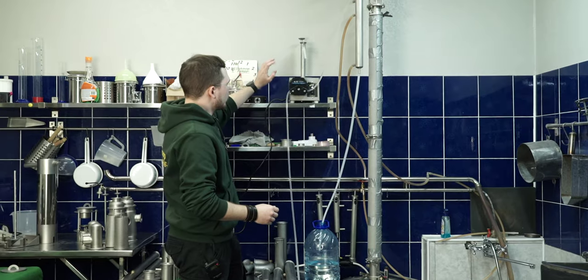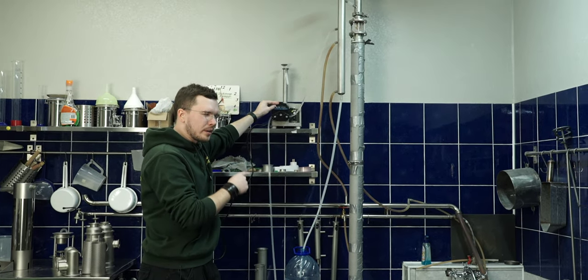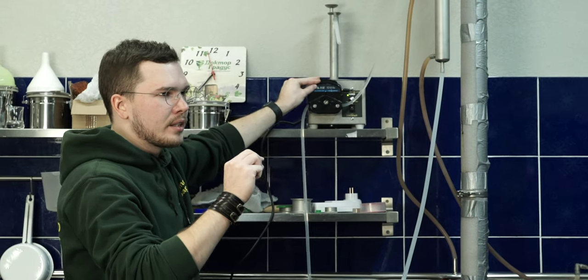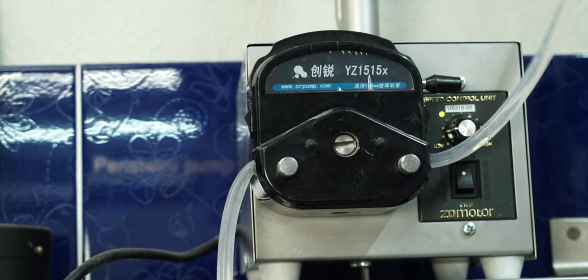Then we go to the peristaltic pump. This one is actually really accurate and you are able to adjust it with the needed speed. For example, this one is working right now with a speed of 12 liters an hour.